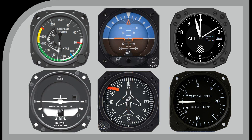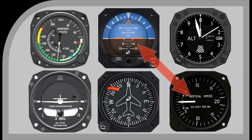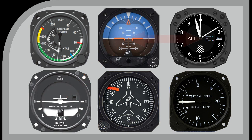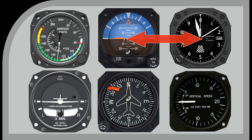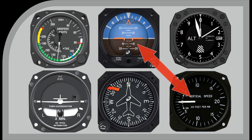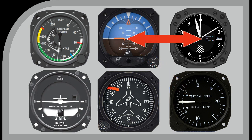During a turn, the pilot will have to make the occasional scan of the altimeter and vertical speed indicator, as a turn is more likely to create a climb or descent. Therefore, a modified scan may be needed. This will continue until the correct datums are achieved, and then the pilot will revert back to the original scan pattern.